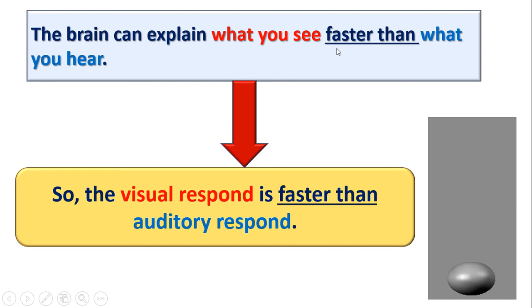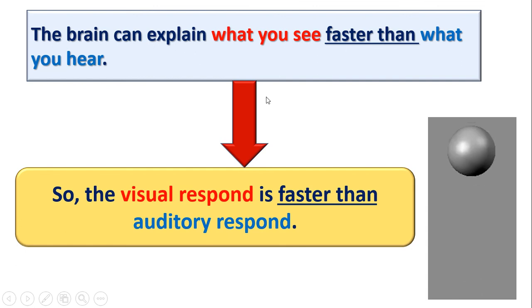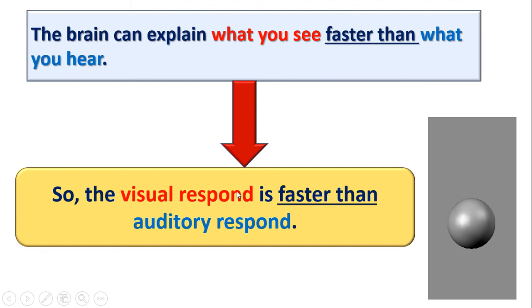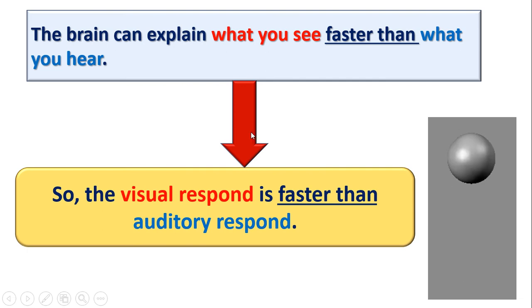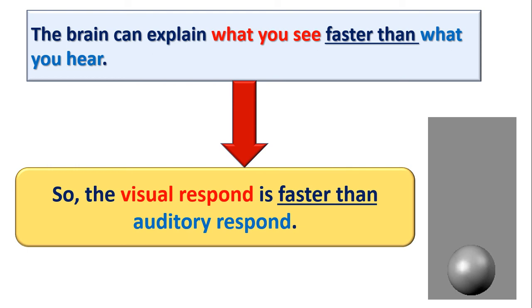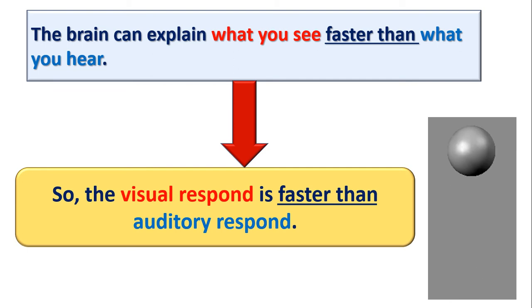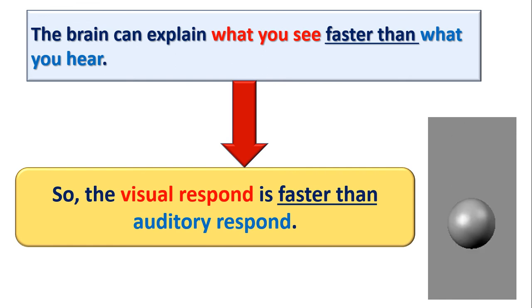After that, you can hear it. The brain explains what you see faster than what you hear. What you see is called visual response. Visual response means what you see. And what you hear is called auditory response. So, visual response means what you see, auditory response means what you hear, and visual response is faster than auditory response.